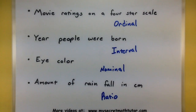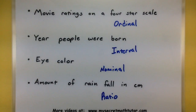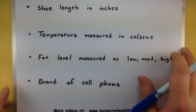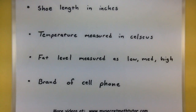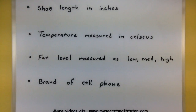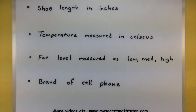There's a lot of criteria that goes into getting all the way down to that ratio level, and you really do have to ask all of those questions. I have four more examples. If you want to try these out on your own, go ahead and pause the video. See if you can figure out whether shoe length, temperature measured in Celsius, fat level of some cookies, or the brand of a cell phone — what category those are in.